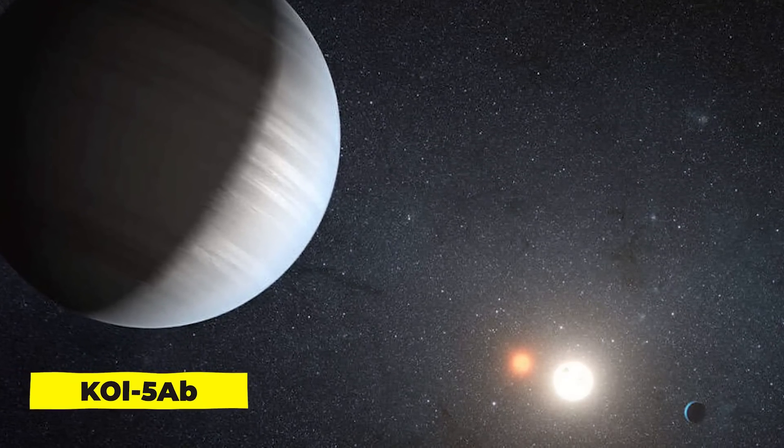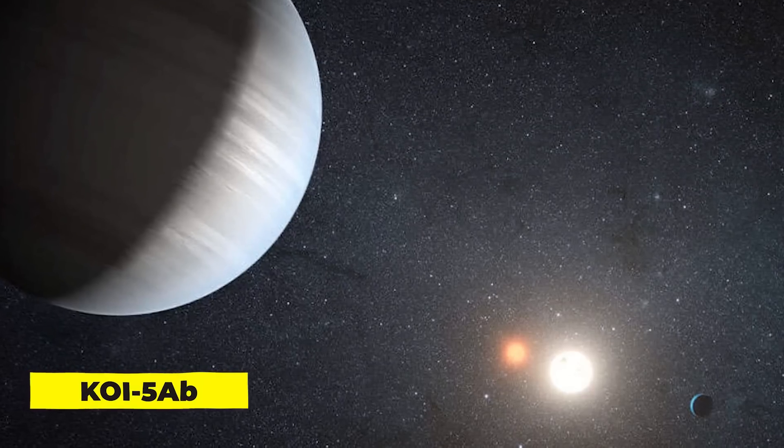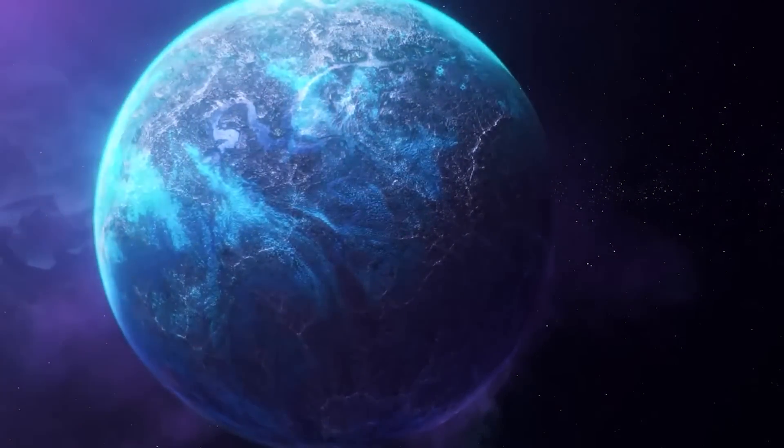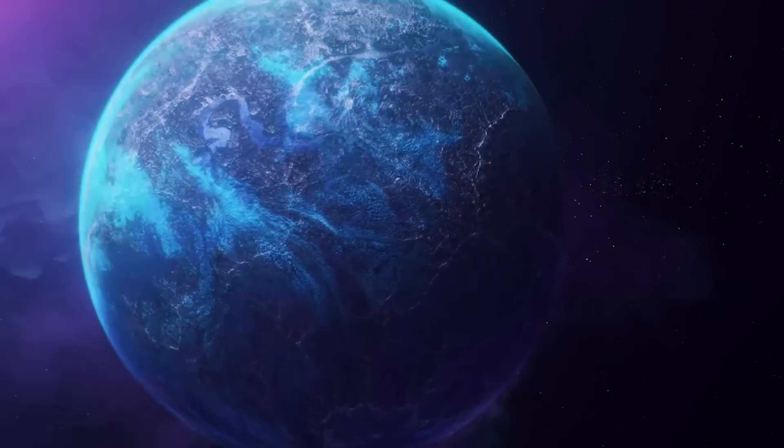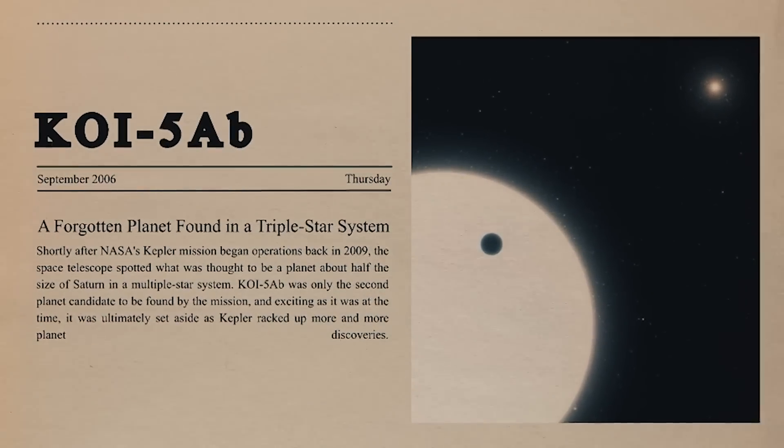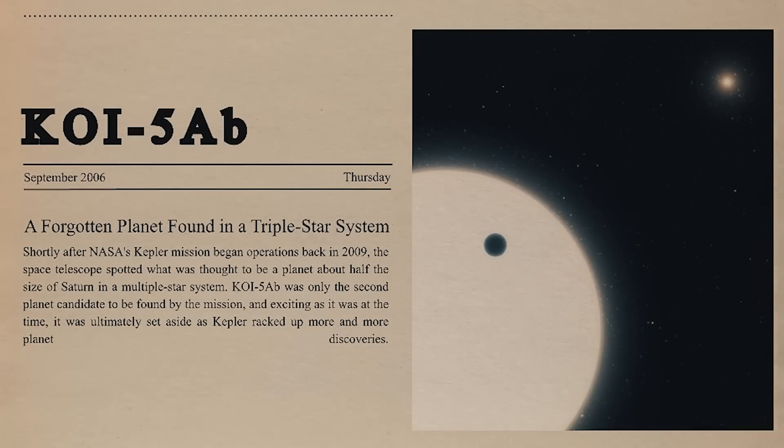KOI-5AB. What makes this one specifically unique is not its properties, but the system it is a member of. The planet about half the size of Saturn was first ignored, because it was complicated and even considered science fiction. A decade later, the system, named KOI-5, was given the scientific attention it deserved. It turned out that astronomers stumbled across a triple star system.